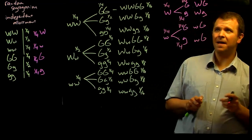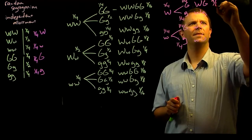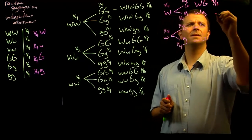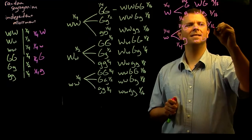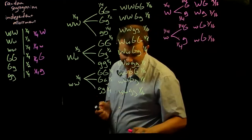And because they're independent, we can simply multiply them together. So, 9/16ths, 3/16ths, 3/16ths, and 1/16th.